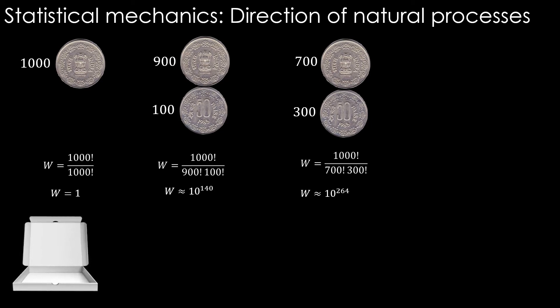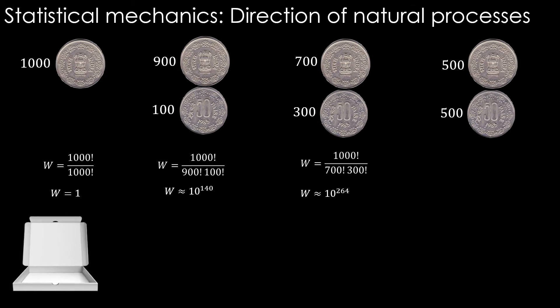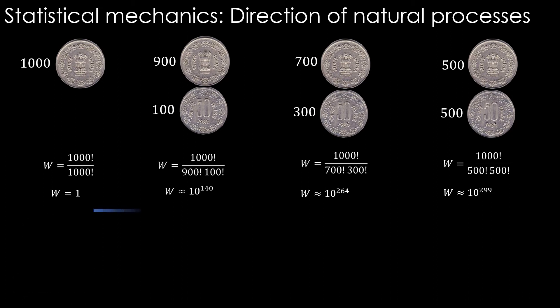Let's say we keep shaking and not stopping. We end up in a state like this, the middle configuration of equal heads and tails. The W turns out to be 10 power 299, a truly immense number. The system moves towards this state. Very intuitive, isn't it?